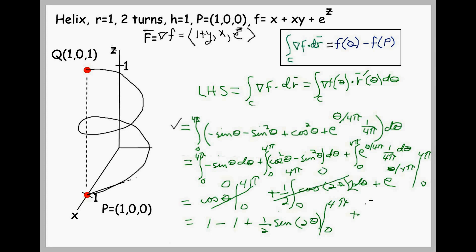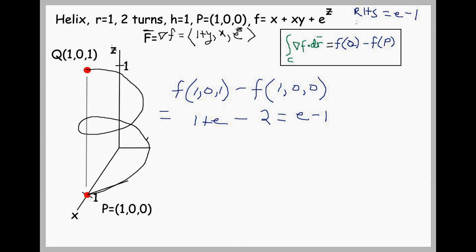Finally, for the third integral, we treat it as the integral of e to the u du, where u is theta over 4 pi. That integral is just e to the u, evaluated from 0 to 4 pi. At the upper limit, e to the 4 pi over 4 pi is e to the 1; at the lower limit, e to the zero is 1. So our left-hand side equals e minus 1, and we've just verified the Fundamental Theorem of Calculus for line integrals in the case of this particular helix.